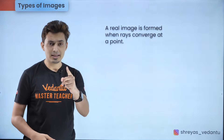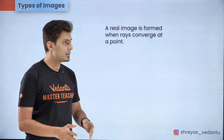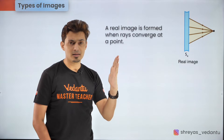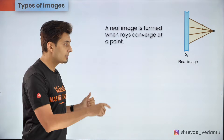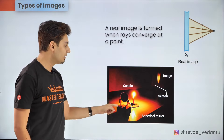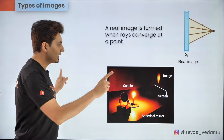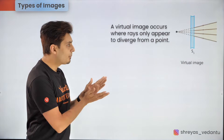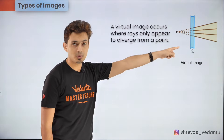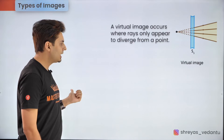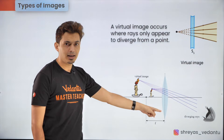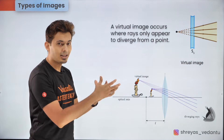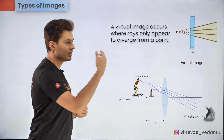The first important thing I want to talk about is the kinds of images. A real image is formed when the rays converge at a particular point, as shown here, and it produces a crisp image on the screen. Real images can be obtained on a screen using some lenses or mirrors. A virtual image is formed when the rays appear to diverge from a particular point. The best example is observing an object using a magnifying glass — the image formed is virtual; you cannot touch it, it just gives you the feel as if it's there on the other side.